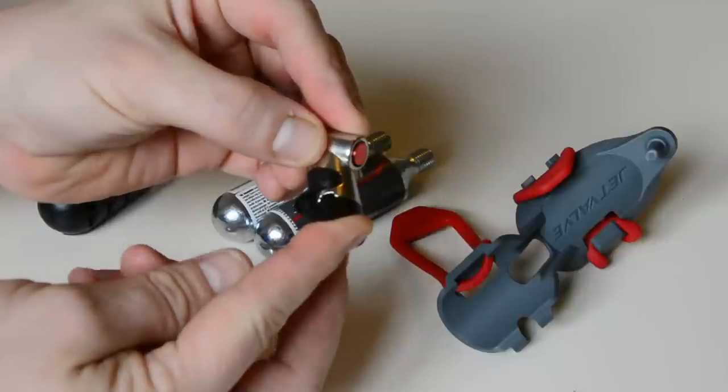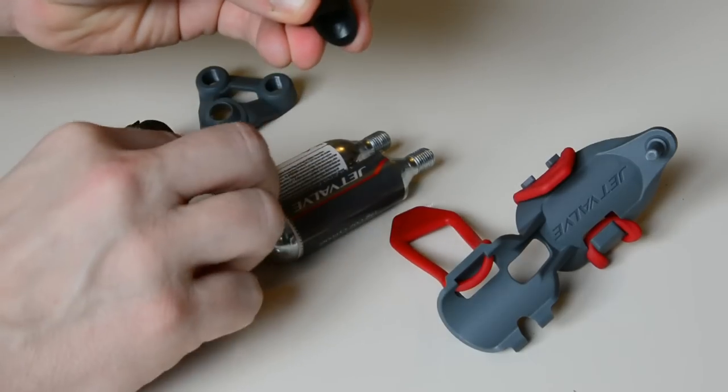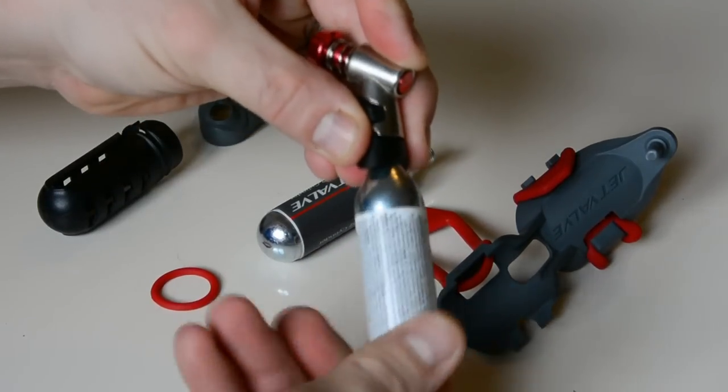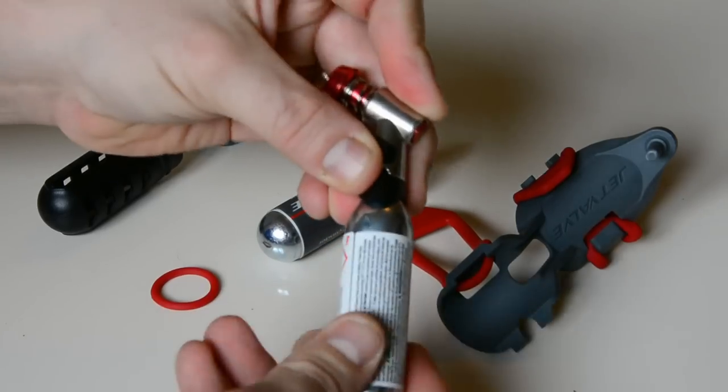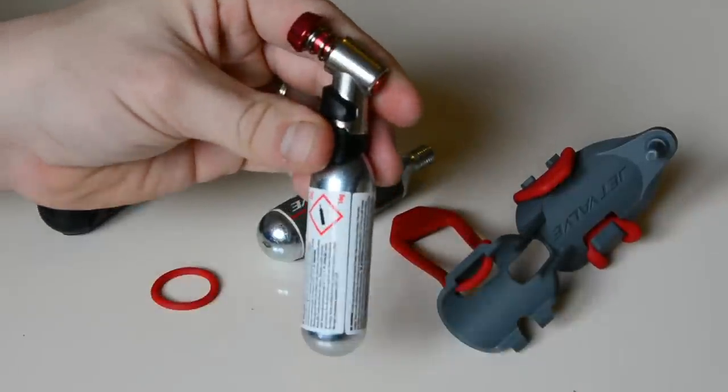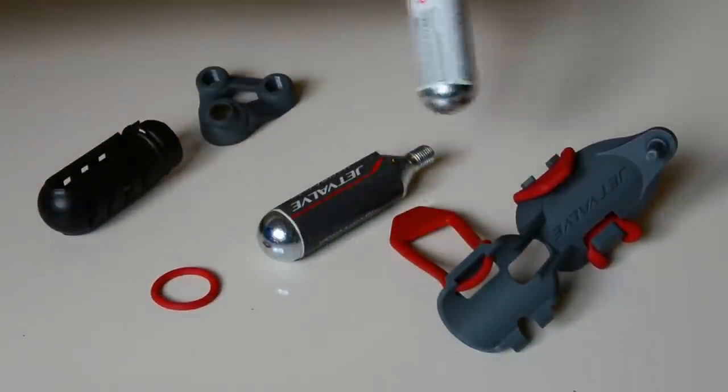And what that does, that just goes up there and then you can grab one of these and then just screw that onto the inflator. It doesn't pierce it and then it holds that into place and that forms part of it when it goes onto the bracket.